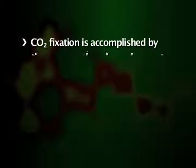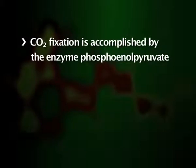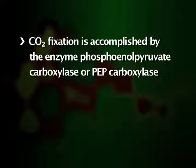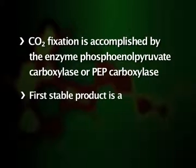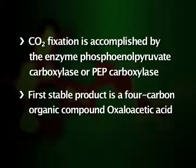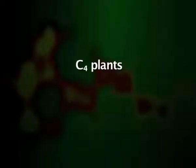It was demonstrated that in this pathway, carbon dioxide fixation is accomplished by the enzyme phosphoenolpyruvate carboxylase (PEP carboxylase), and the first stable product is a four-carbon organic compound — oxaloacetic acid. Hence, this cycle is also known as the C4 cycle, and the plants harboring this mechanism are called C4 plants.